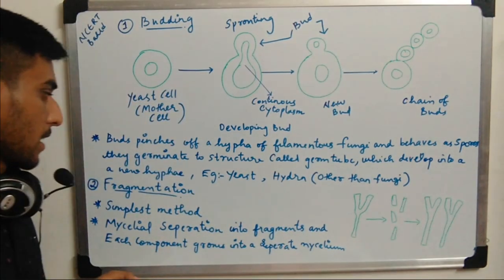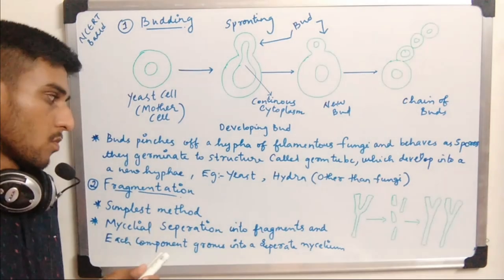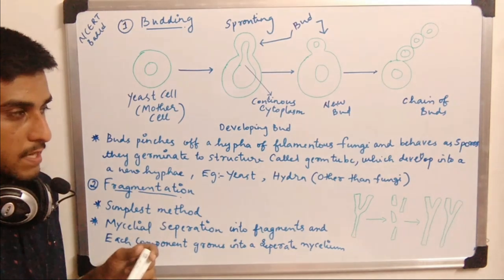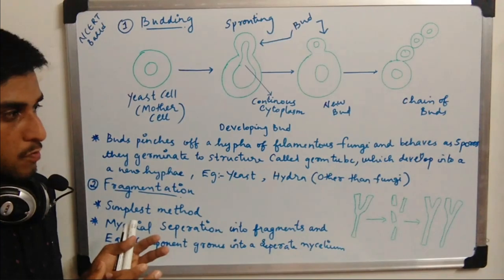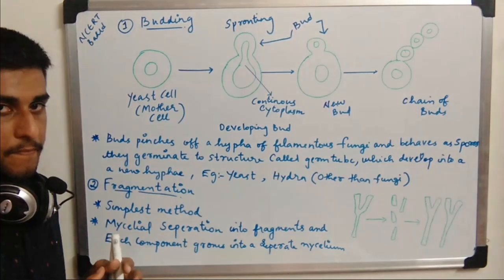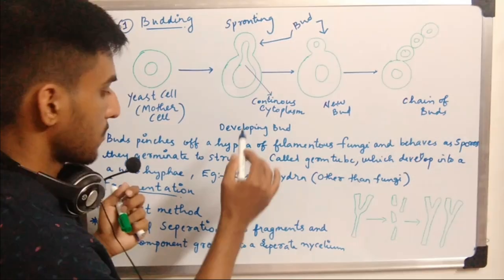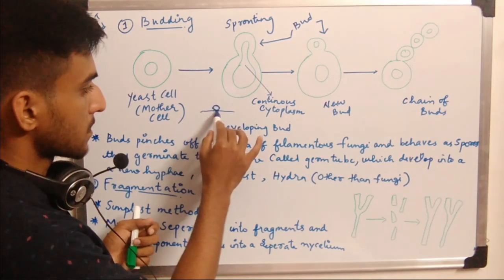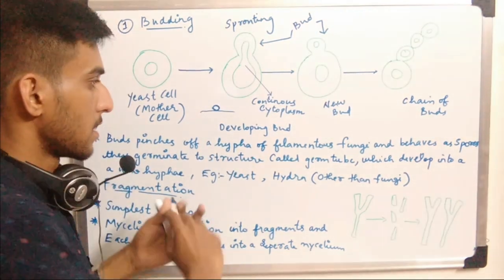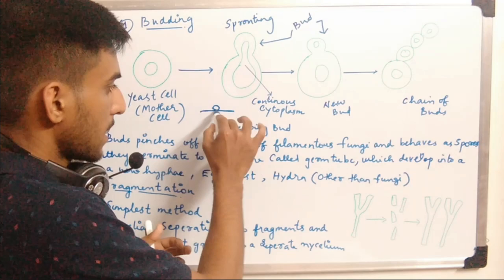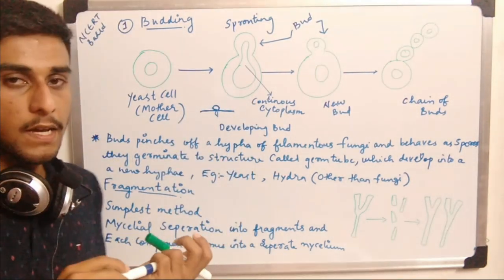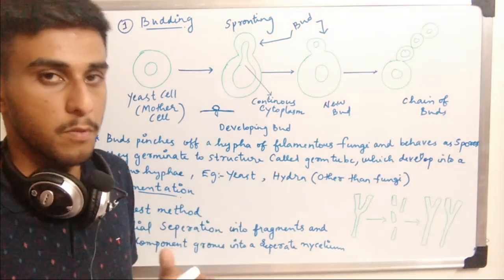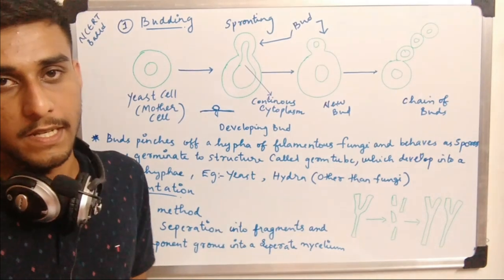A bud pinches off a hypha in filamentous fungi and behaves as a spore. When it germinates, a structure called a germ tube develops into a new hypha. The bud gets in contact with a substratum, a germ tube is produced, nourishment occurs, and mycelia or the body is produced, eventually flourishing as a mature fungi.